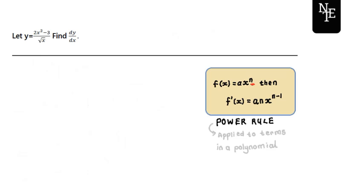As stated in previous videos, the power rule is a differentiation technique which we can use for term-by-term differentiation. By now, you should have noticed that the power rule basically applies to terms in a polynomial. What we have here is a quotient function, meaning our function is given by two different functions divided by each other. This is not a polynomial, so we're going to have to transform it into a polynomial — a series of terms in the form a times x to some exponent. To do that, we need to remember that the square root of x can be rewritten as x to the exponent one half.